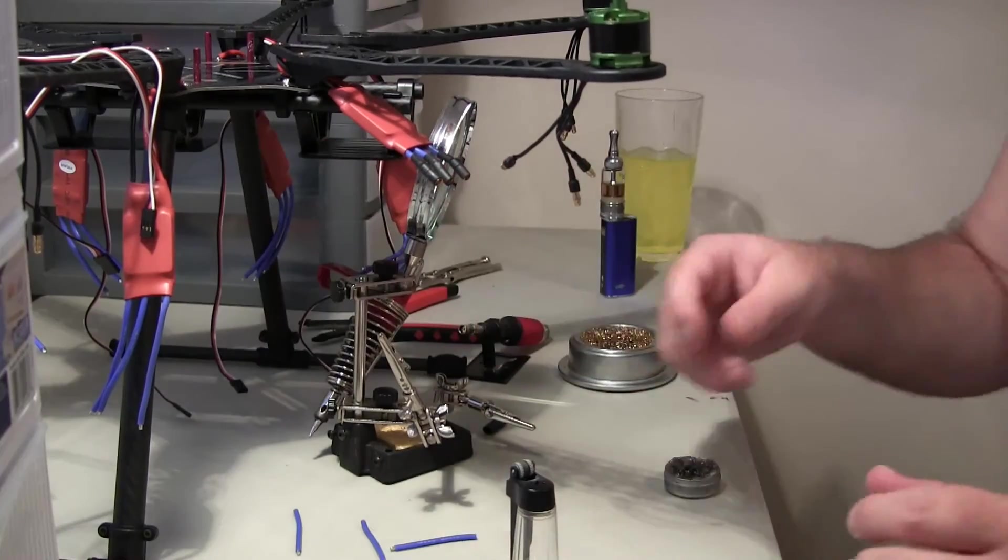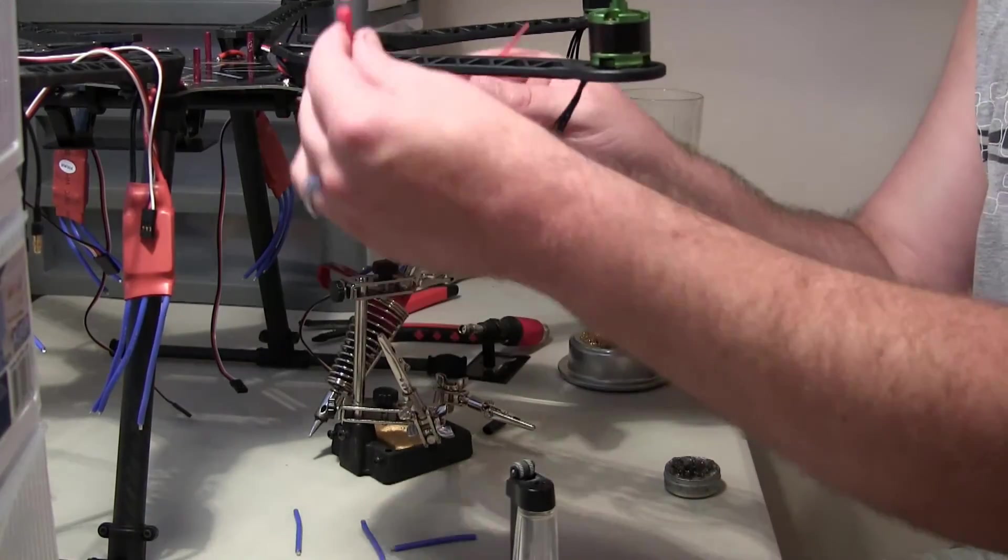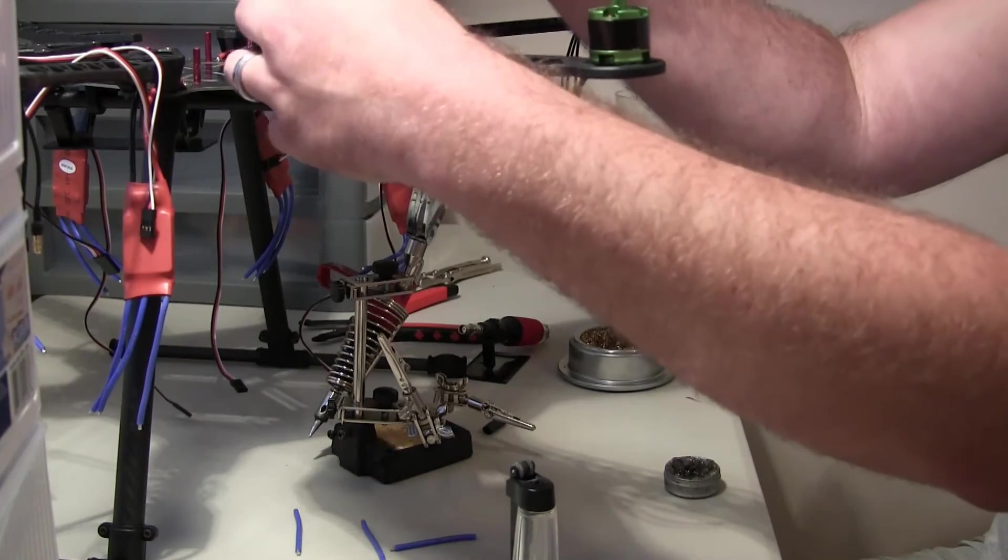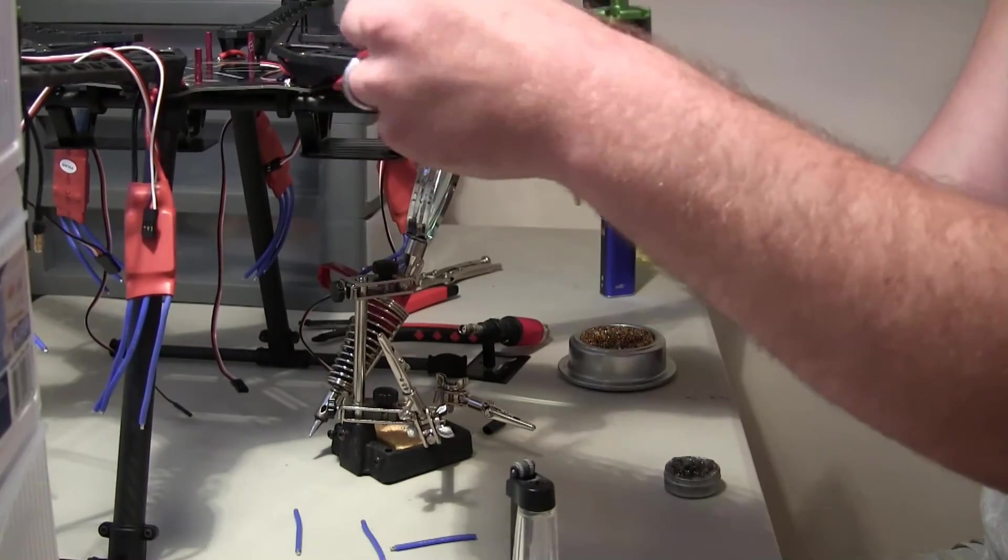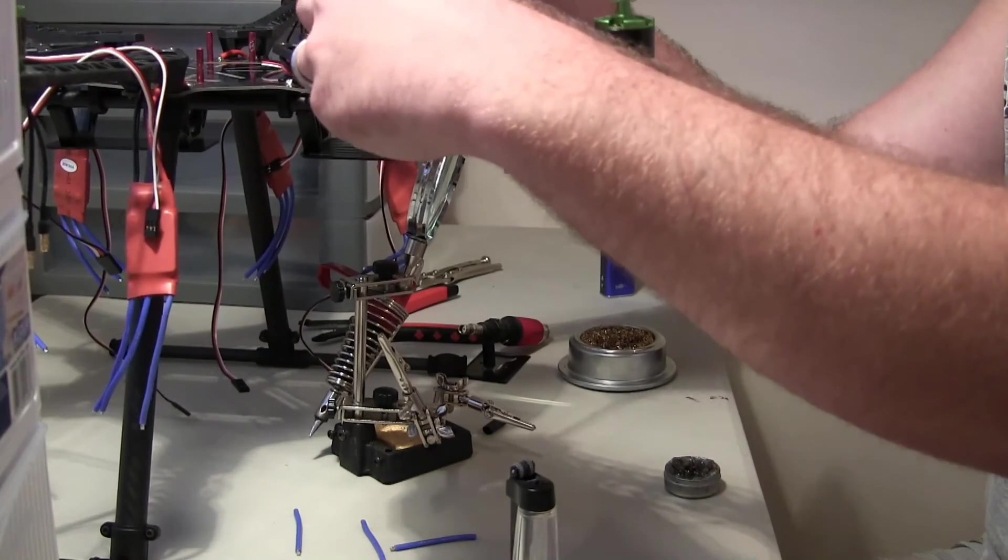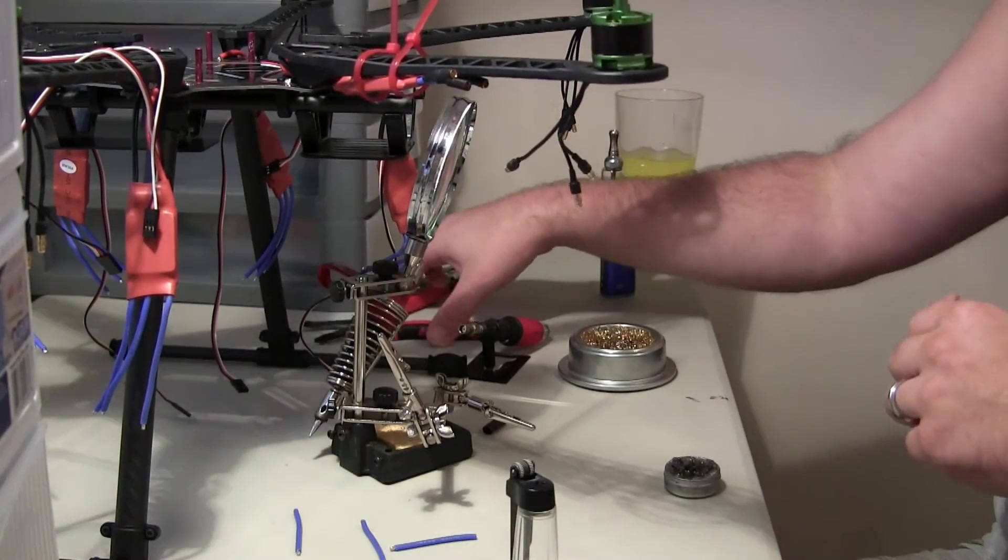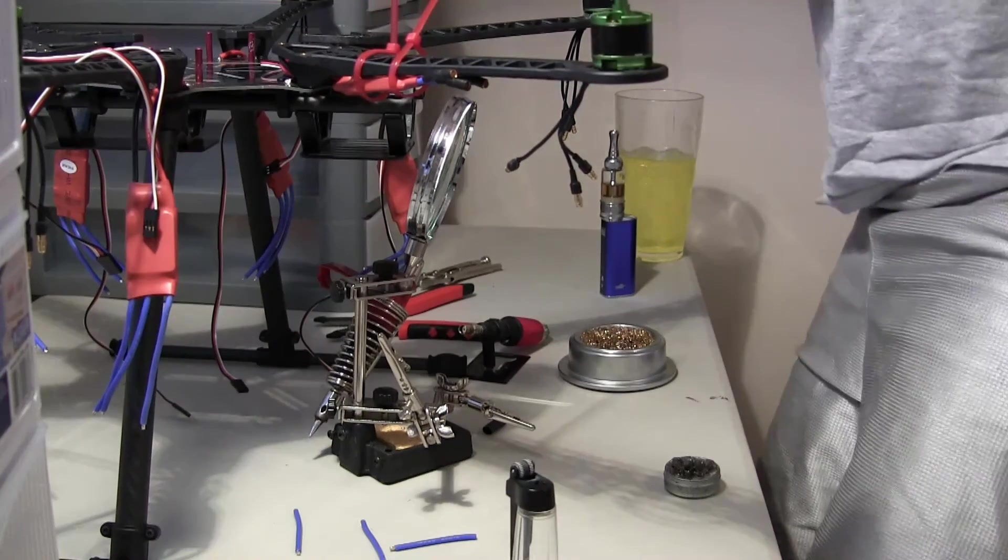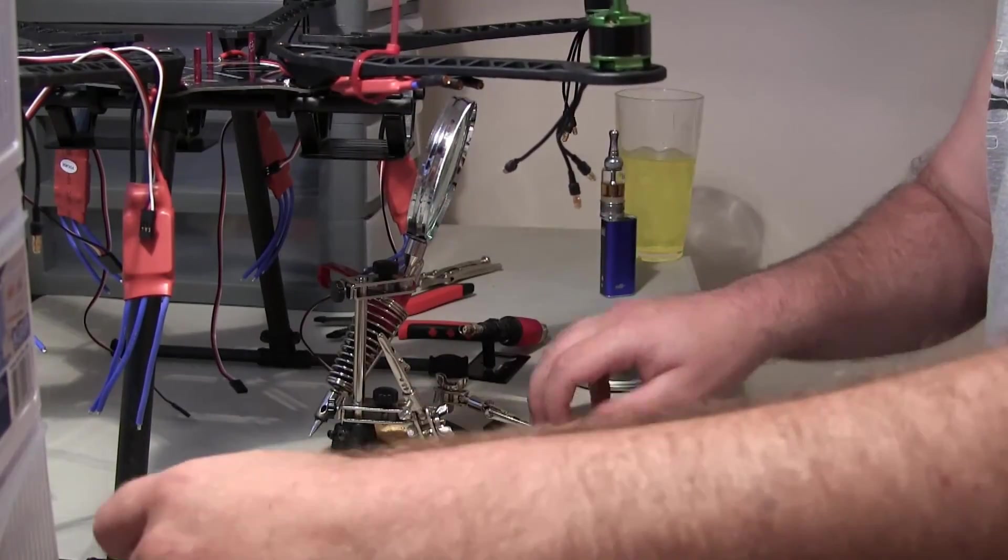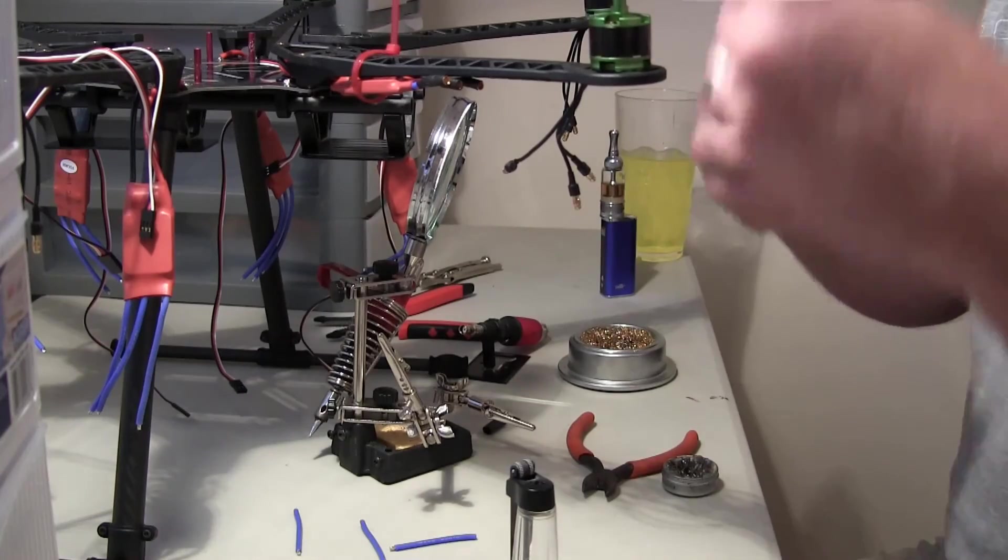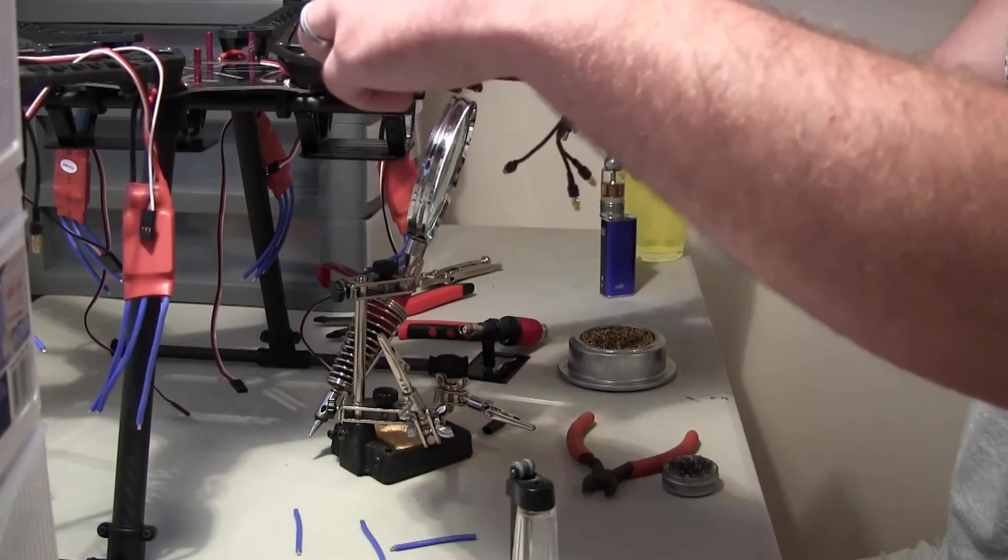So let's go ahead and get this thing zip tied. I chose red for the two fronts for the zip ties because I want to be able to differentiate. I'm not going to make them too tight at first. Why did I do that? I like to have my stuff look a little better. I like all my stuff going the same direction.